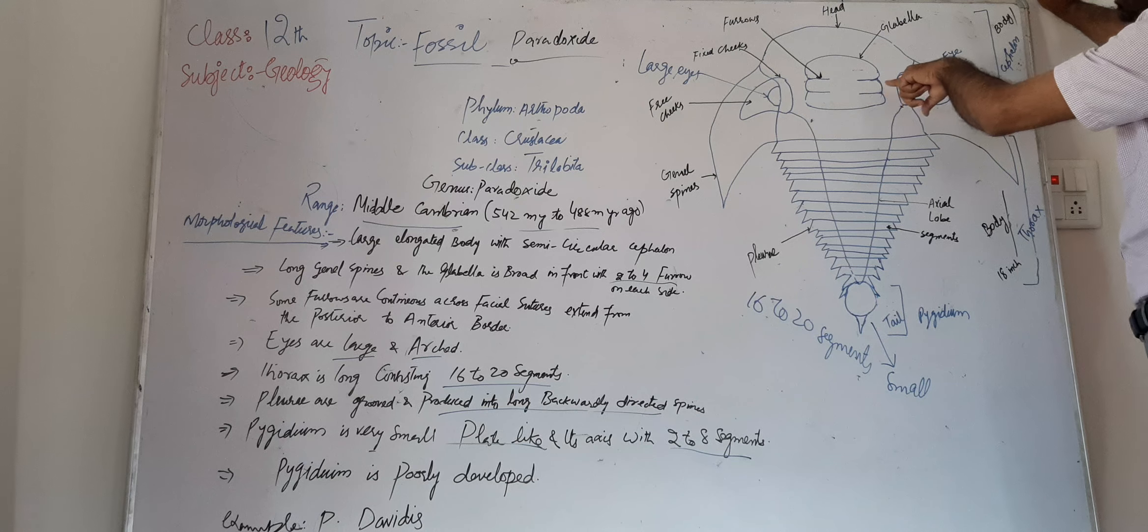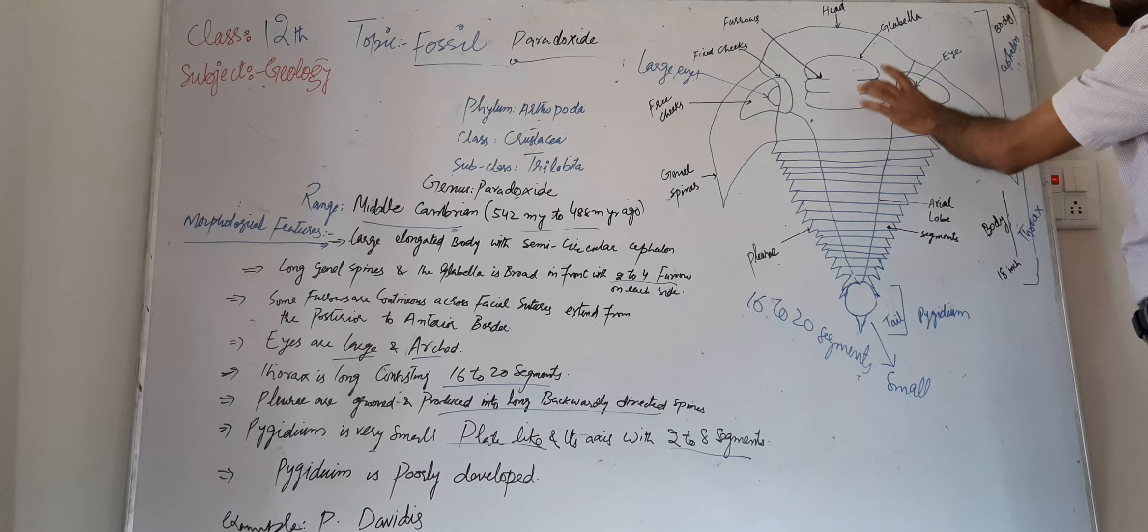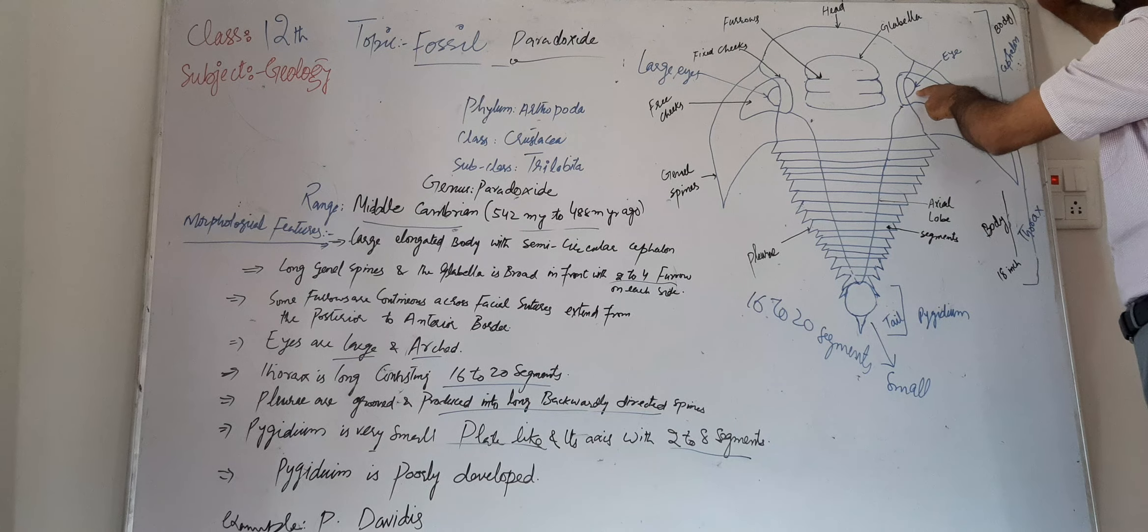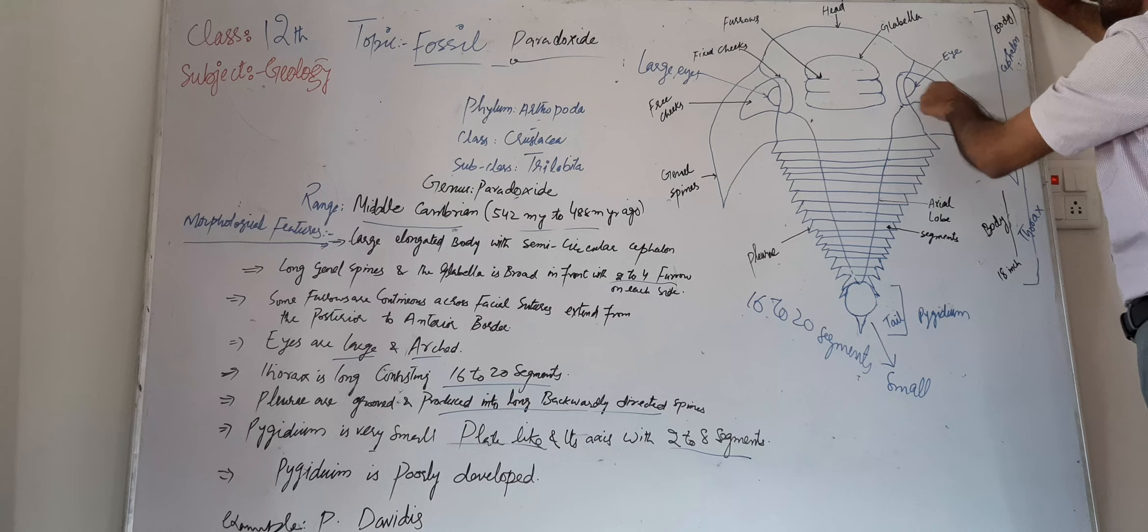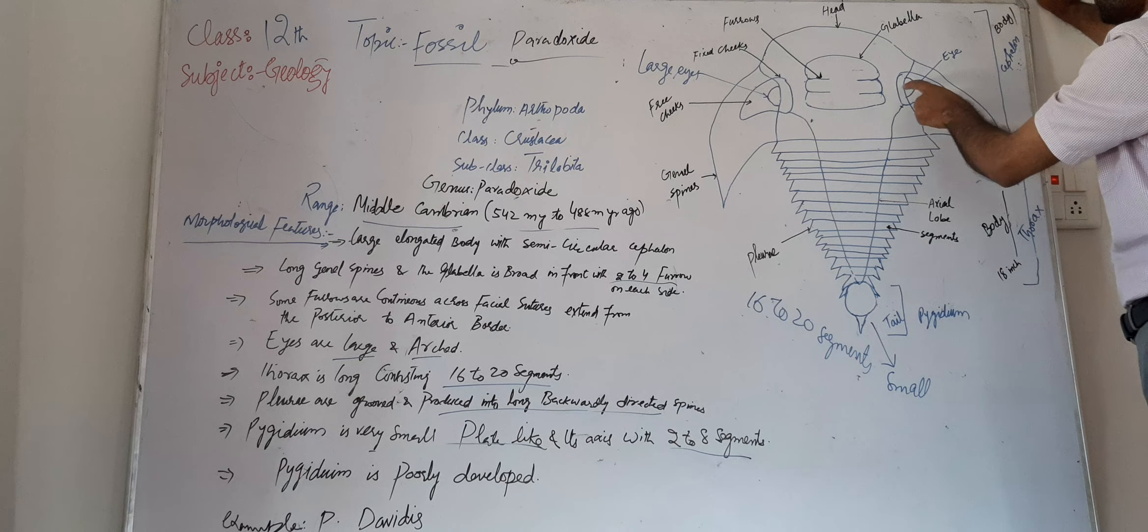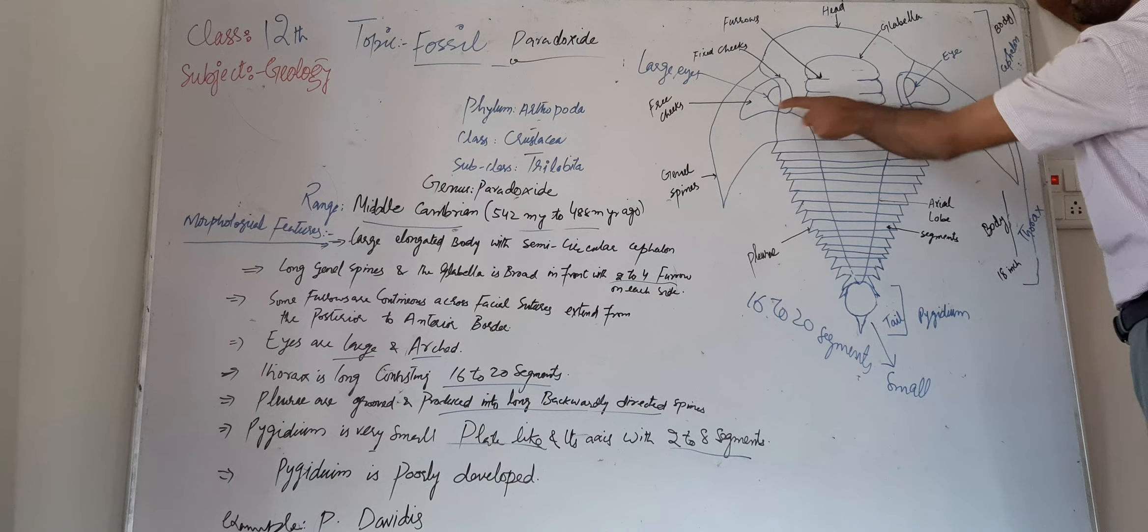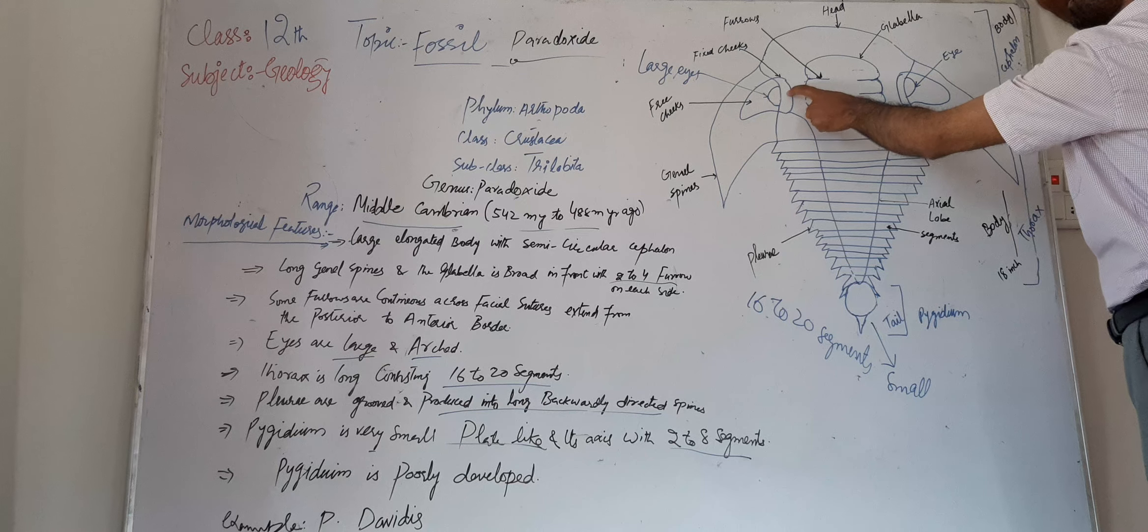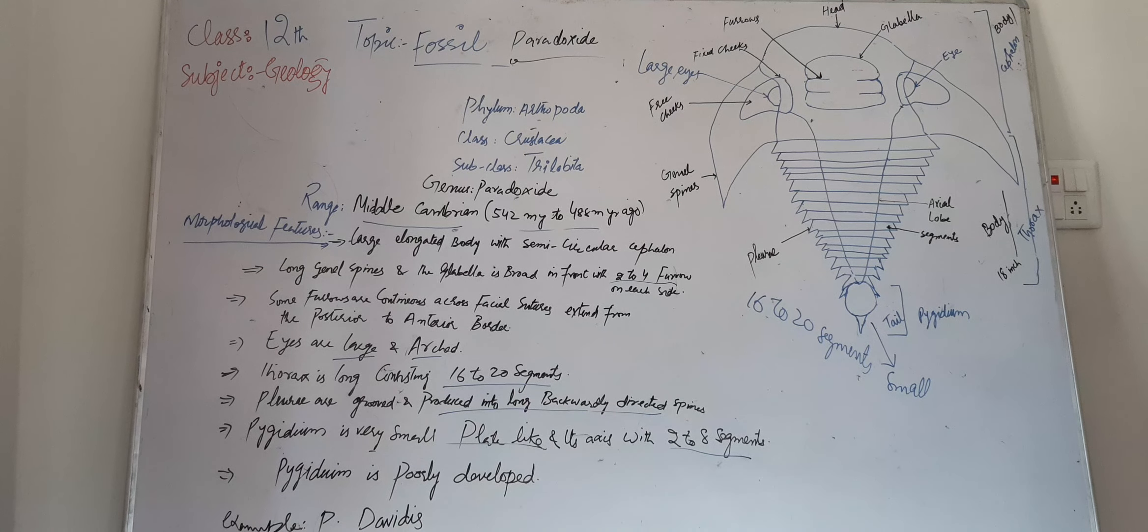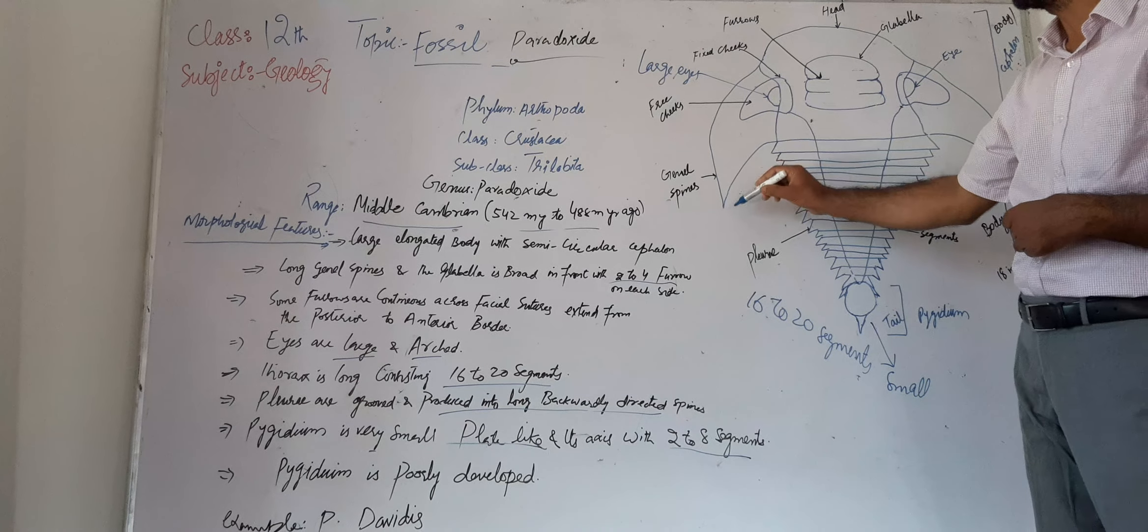In Calymene there is a subcircular body which is called the cephalon part. The eyes are large and arched. Here are fixed cheeks and free cheeks—the eyes have free cheeks on the outer side and fixed cheeks on the inner side. There are circular features around it, but in Paradoxides it is more angular.